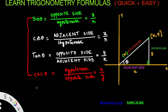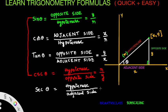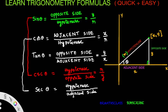Secant theta is the reciprocal of cos theta. Cos theta is adjacent side by hypotenuse, and secant theta is hypotenuse by adjacent side — they are reciprocal to each other. So if you know the formula of cos theta, you can say secant theta easily. Secant theta equals R by X.